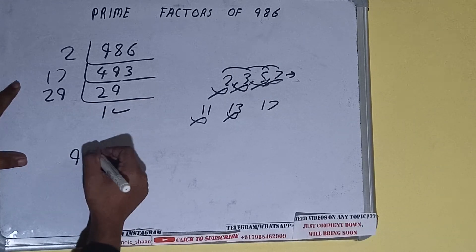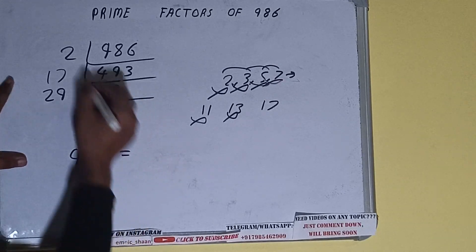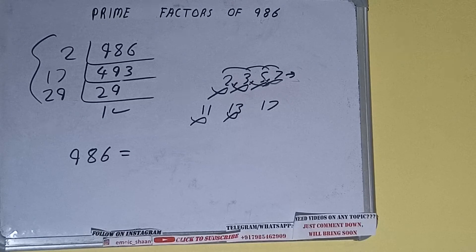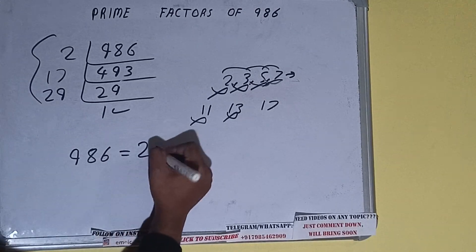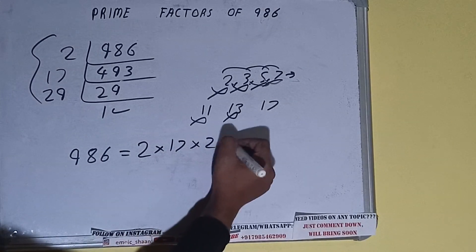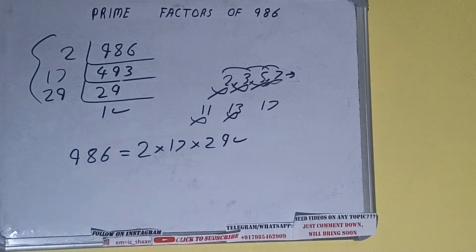And do one last thing: that is, prime factors of 986 equals multiply whatever we have on the left-hand side, that is 2 times 17 times 29. That will be the answer. So this is all about prime factors of 986.